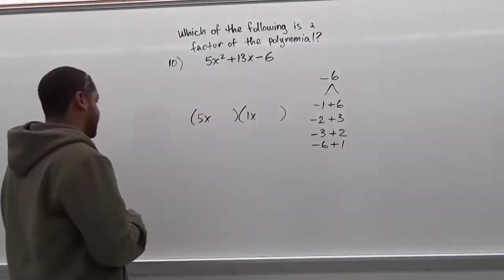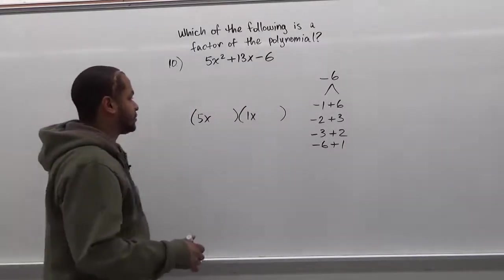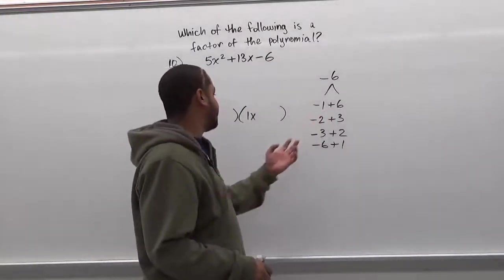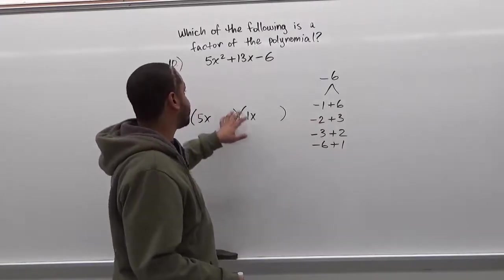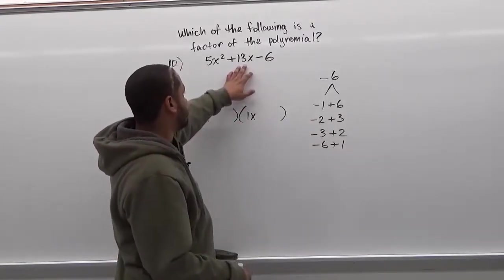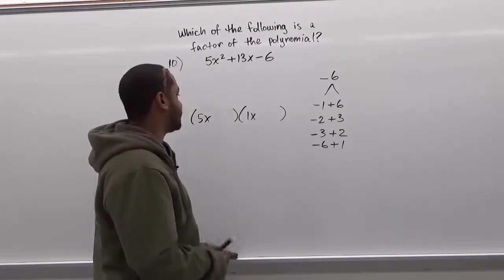Now what we want to do here is we want to do what we call a trial and error. We want to test each set of factors into the set of parentheses until we can get the distribution to give us a positive 13x for the middle term.